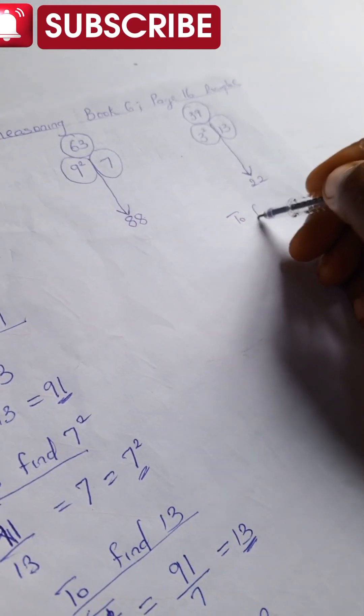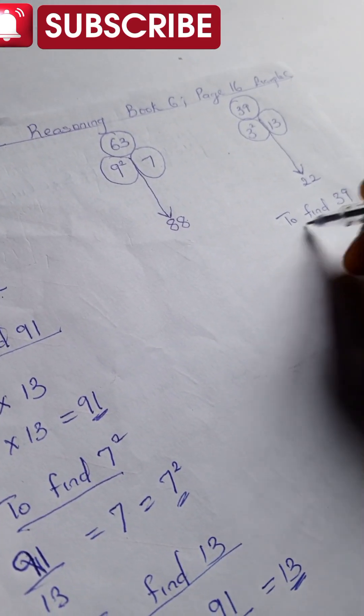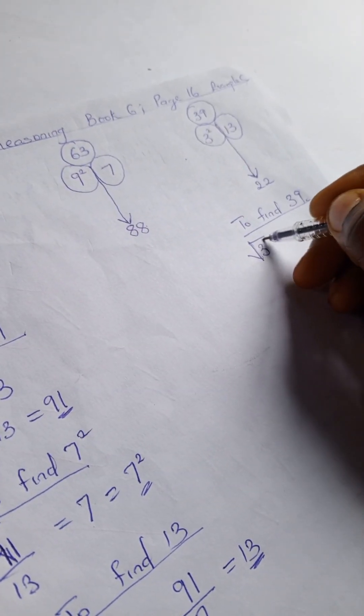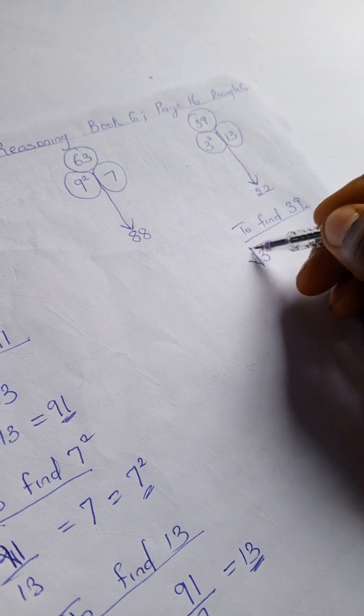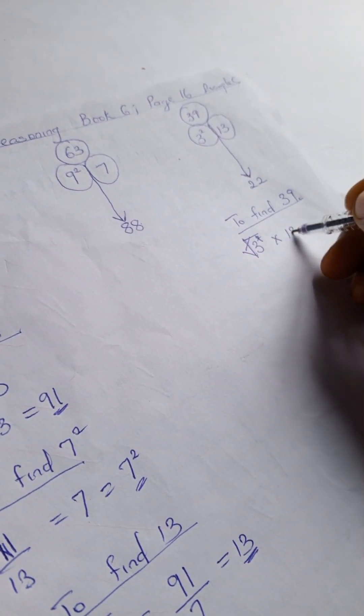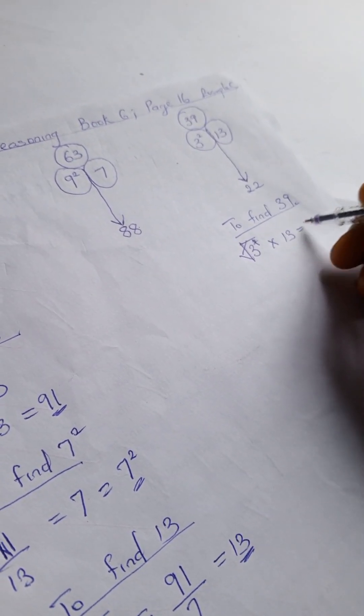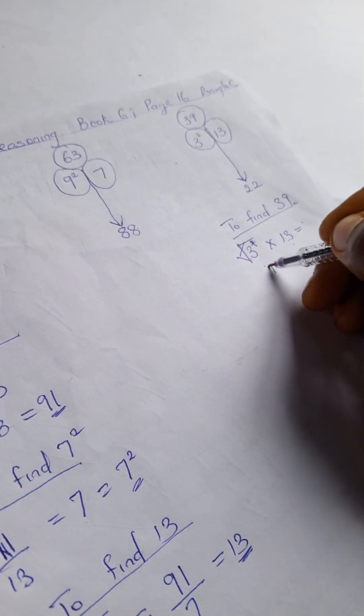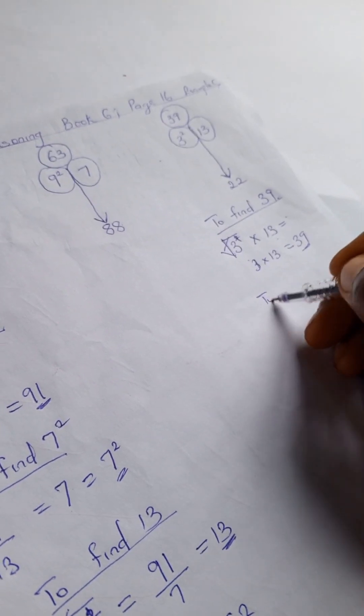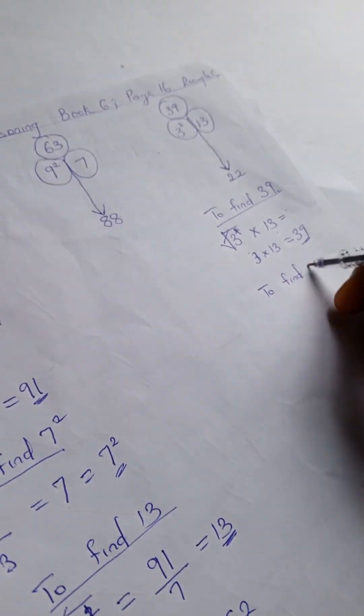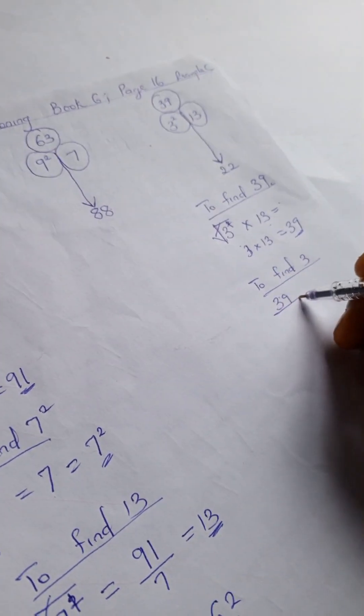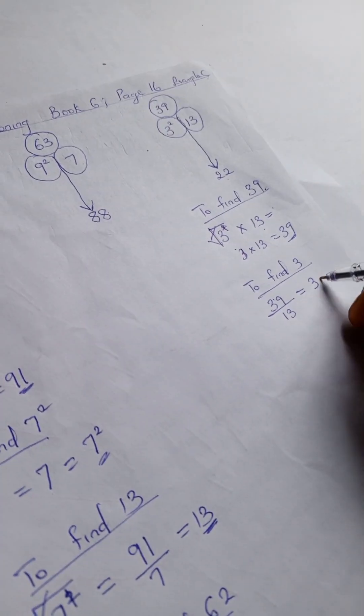To find 39, we're going to have square root of 3 squared. Square here cancels out our square root, and we're left with 3. So times our 13, we have 3 times 13, we have 39. And to find 3, we have 39 divided by 13, that gives us 3, and when you square your 3, you have your 3 squared.